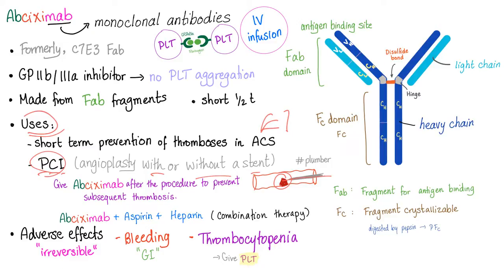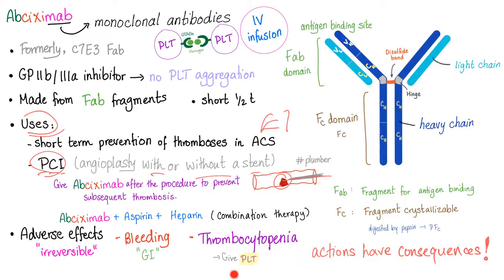Adverse effects of Abciximab: it is irreversible. Bleeding is a side effect — if you inhibit platelet aggregation and blood coagulation, you will bleed. Abciximab can also lead to thrombocytopenia. When you have thrombocytopenia due to Abciximab, the solution is to give platelets.